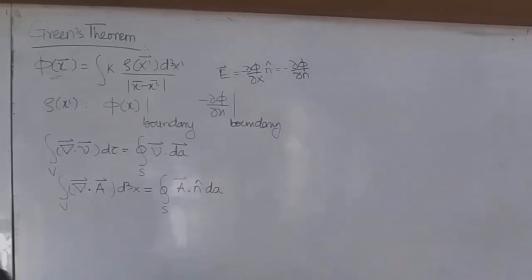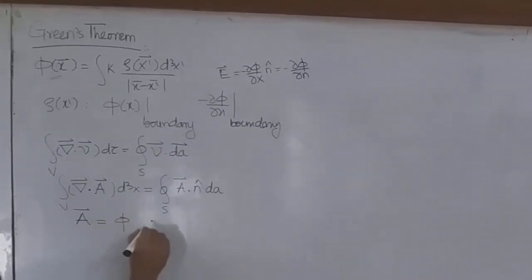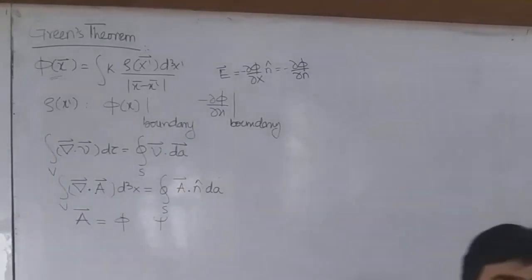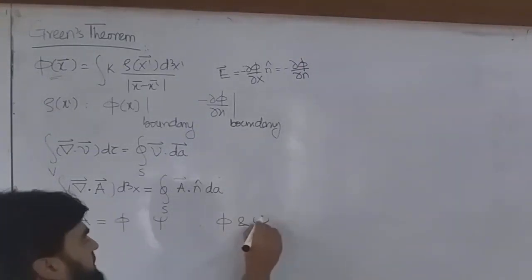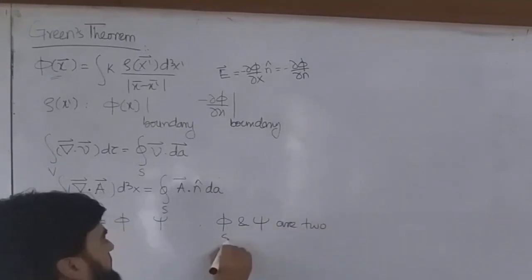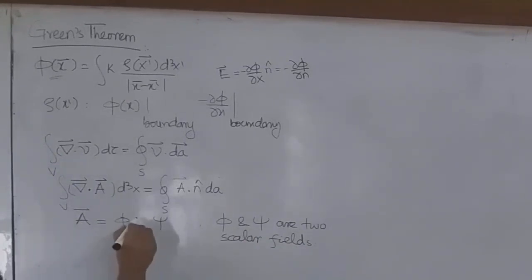Now let's define this vector A as the result of two scalar potentials — φ and ψ — which are actually two scalar fields. We can write A = φ∇ψ. Since φ and ψ are scalars, to make A a vector we write it as a gradient, so A = φ∇ψ is a vector quantity.